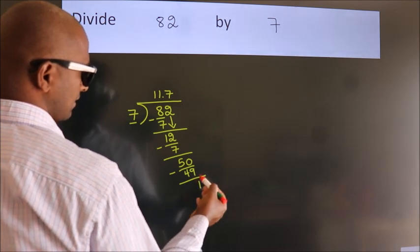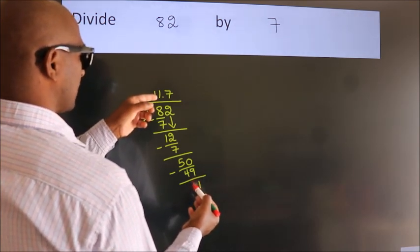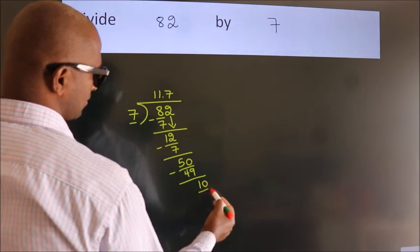After this, we already have the decimal. So, directly take 0. So, 10.